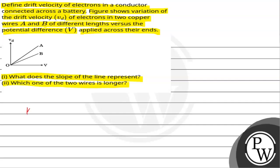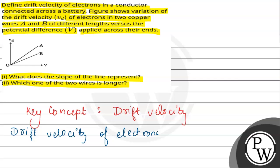Here we have the key concept of drift velocity. First of all, we need to know about drift velocity of electrons in a conductor.